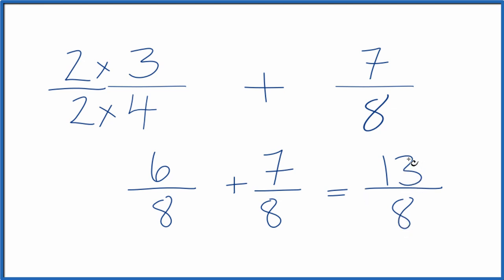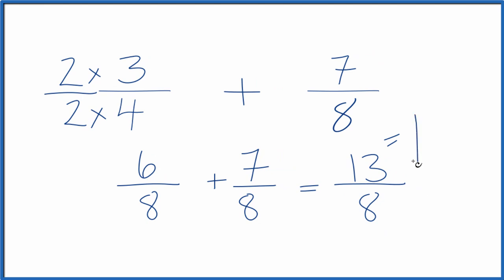This is an improper fraction. The numerator is larger than the denominator. So we could change it to a mixed number. Eight goes into 13 one time with five left over. We bring the eight across. So 13-eighths equals the mixed number one and five-eighths.